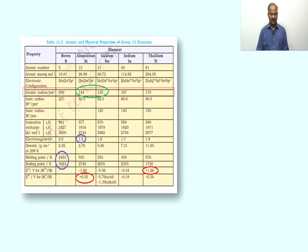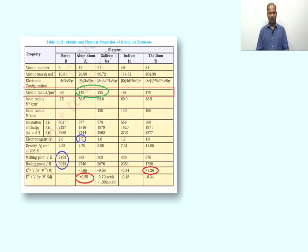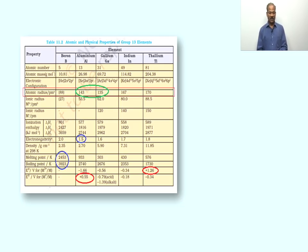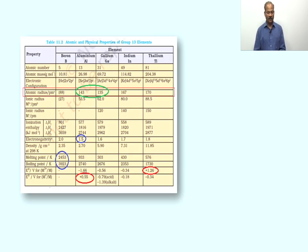If we analyze, we have an important part here — atomic radius. Generally we see in downward move in a group, atomic size increases. But in Group 13 elements, it is not happening uniformly. In Boron and Aluminium the size increases, so the general group trend is followed. But from Aluminium to Gallium, the atomic size is decreased. Aluminium's atomic radius is 143 pm, and Gallium's is shown to be 135 pm.